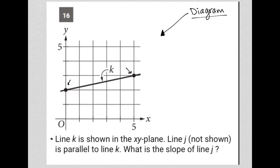The question says line K is shown in the XY plane. Line J, not shown, is parallel to line K. What is the slope of line J?